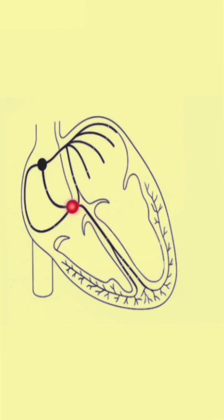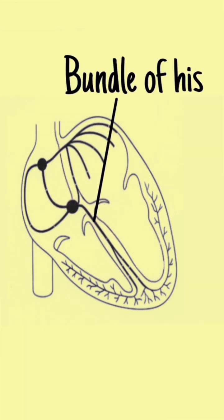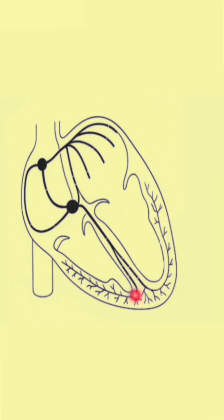Then, the electricity shoots down the bundle of His, splits into left and right branches, and spreads through the Purkinje fibers.